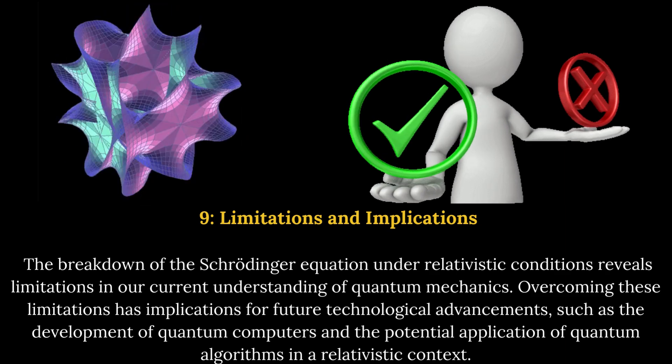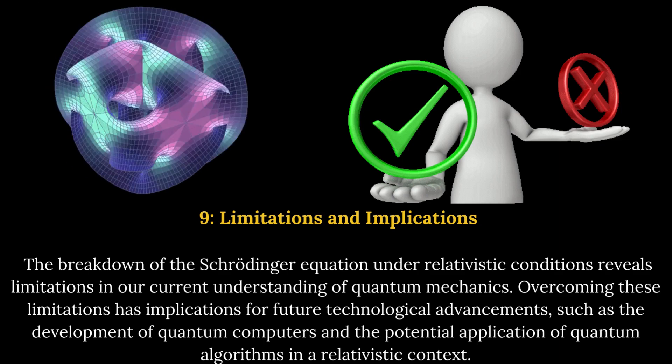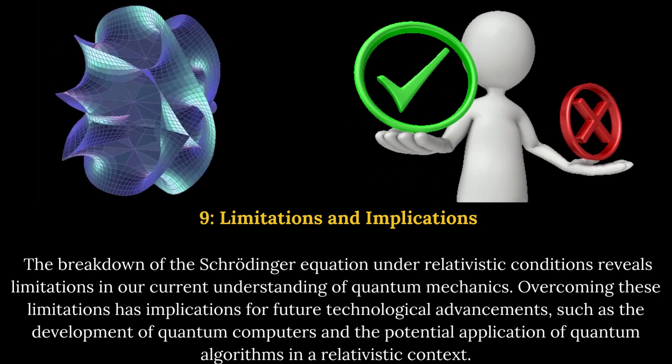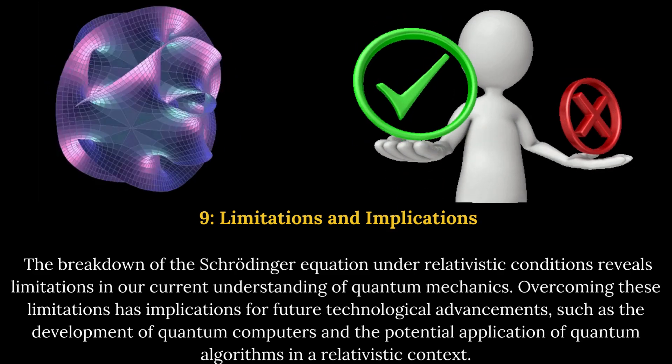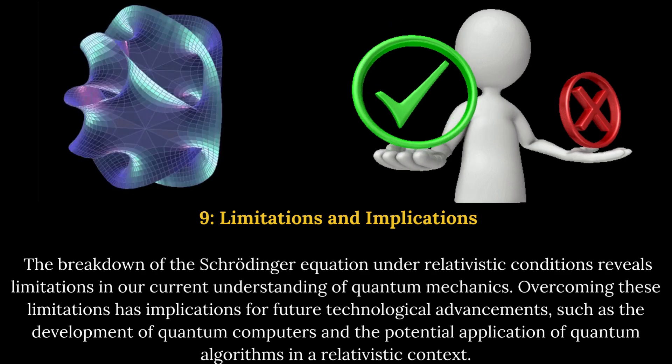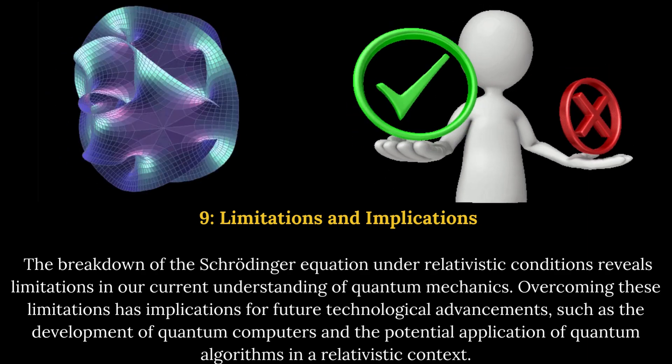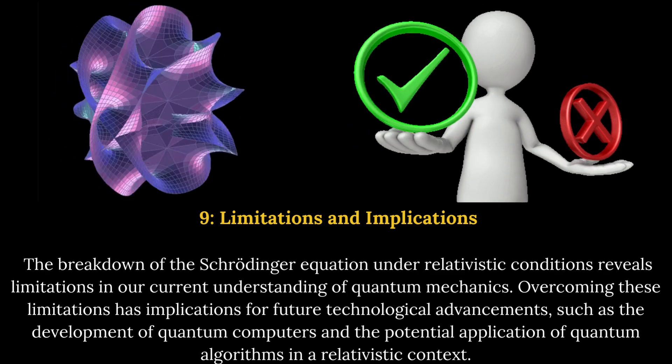9. Limitations and implications. The breakdown of the Schrodinger equation under relativistic conditions reveals limitations in our current understanding of quantum mechanics. Overcoming these limitations has implications for future technological advancements, such as the development of quantum computers and the potential application of quantum algorithms in a relativistic context.